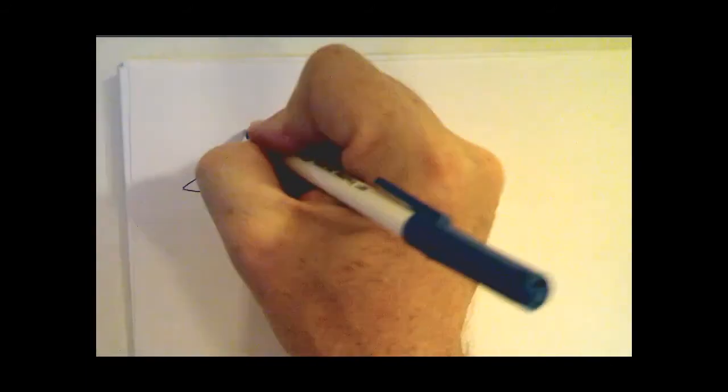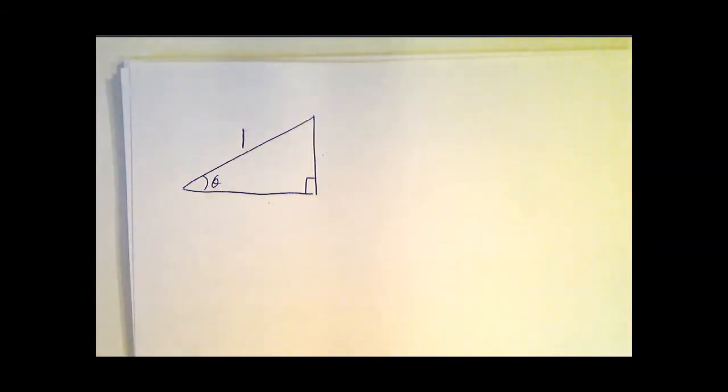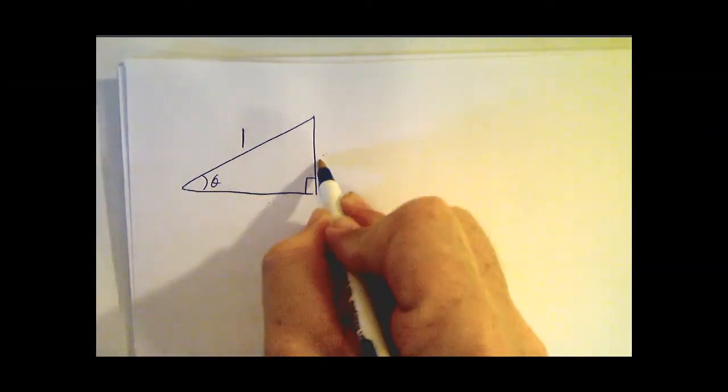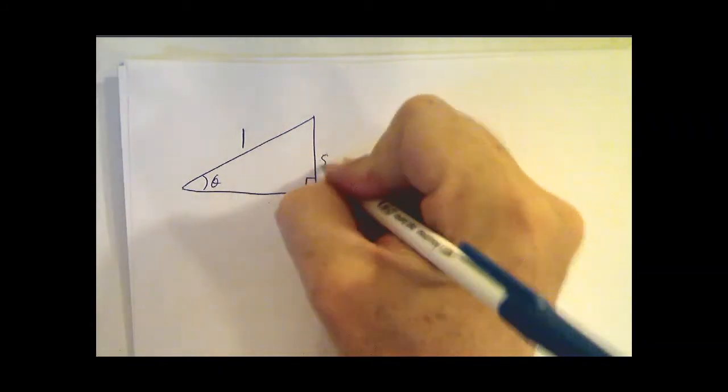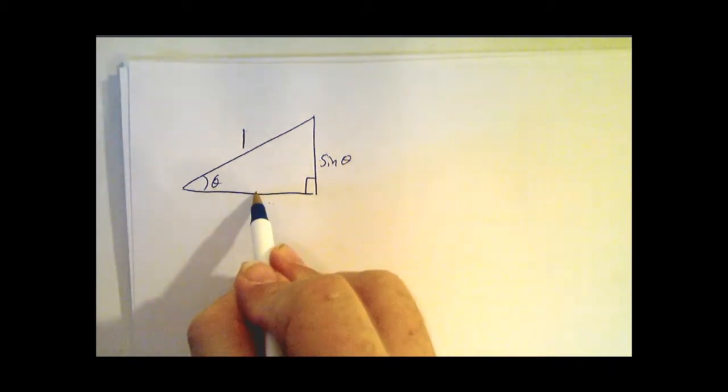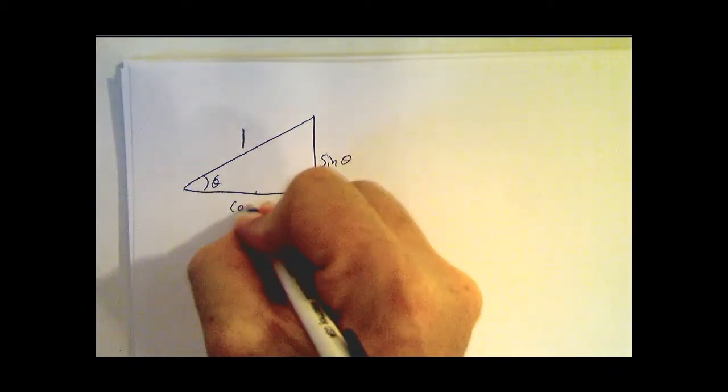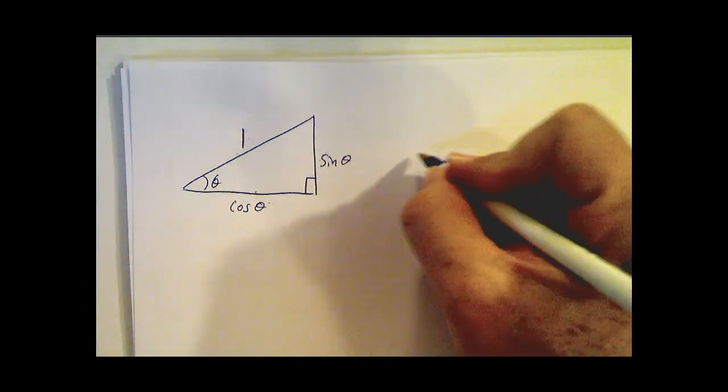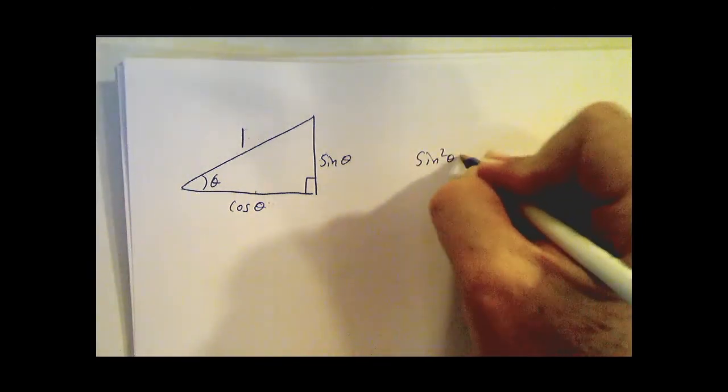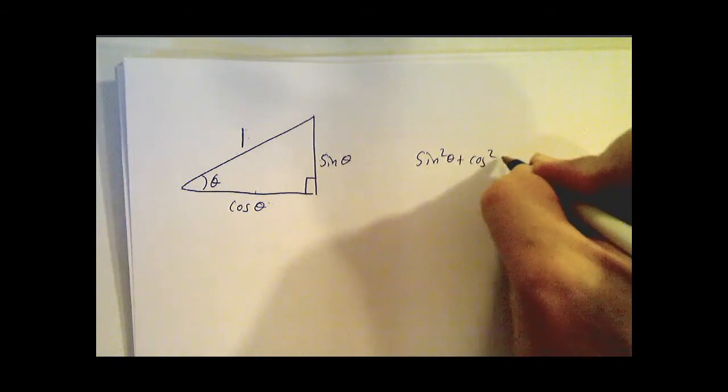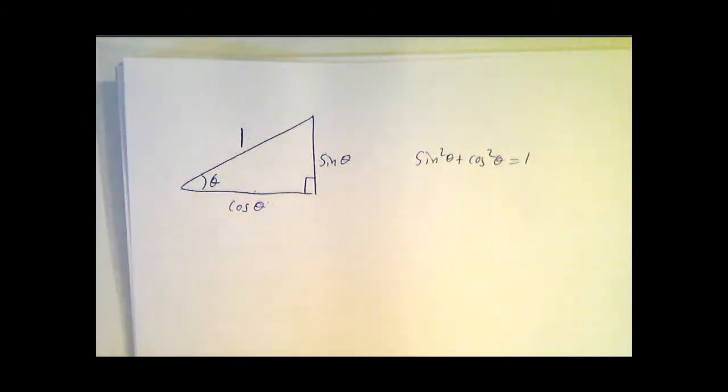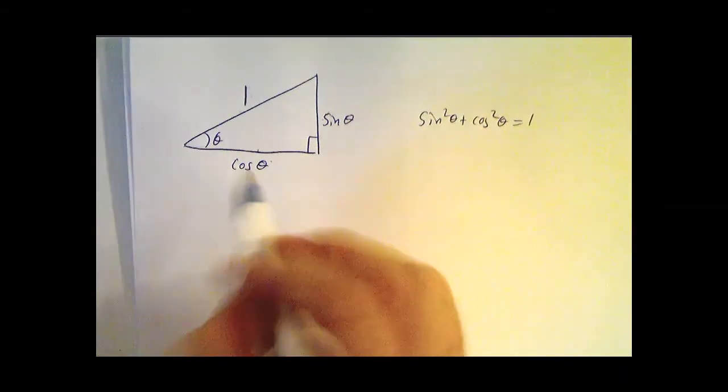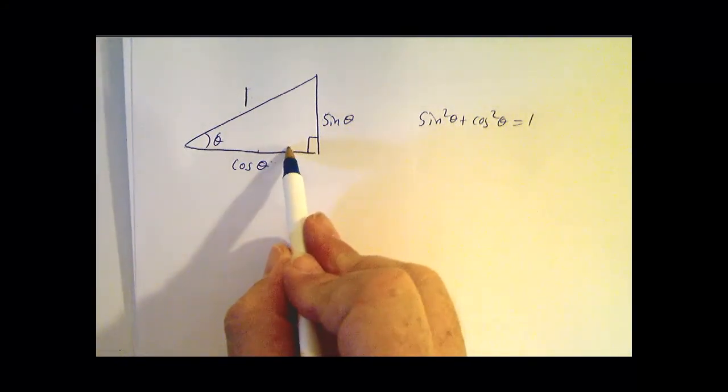So what happens if the hypotenuse is 1? The sine is this side divided by 1, so this side must be sine theta. The cosine is this side divided by 1, so this side must be cosine theta. So the Pythagorean theorem says sine squared theta plus cosine squared theta equals 1. And whenever you're thinking about sines and cosines, it's useful to write down this triangle.